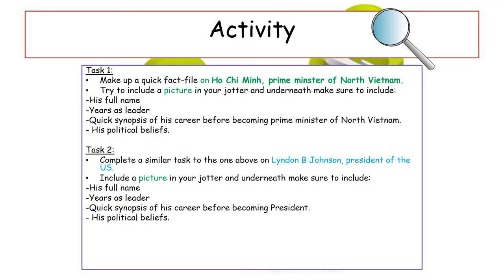Your activity for this lesson is to make a quick fact file on both leaders from either side of the war. Make a fact file on Ho Chi Minh, Prime Minister of North Vietnam - include a picture, his full name, the years he was leader, a synopsis of his career before becoming prime minister, and his political beliefs as a staunch communist. Do the same for Lyndon B. Johnson, president of the US - include his full name, years as leader, a career synopsis, and his political beliefs. This is useful background for your essay introduction. If you have any questions, just ask myself or Mrs. Fogarty. Thank you very much.